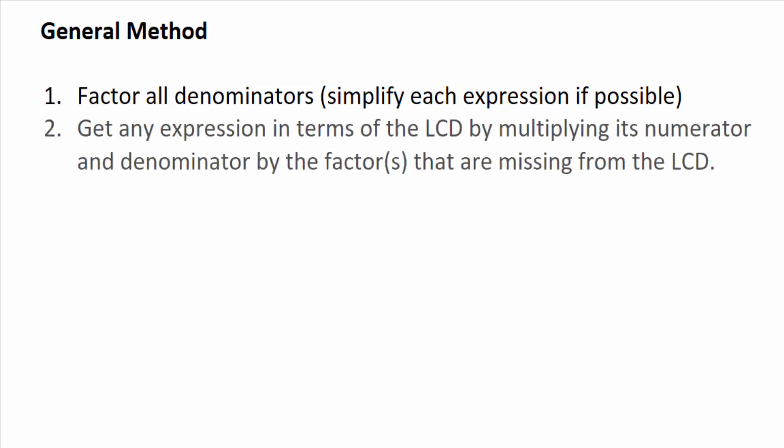The general method for adding rational expressions together: Number one, factor all denominators and simplify each expression if possible—if it's not in simplified form, do that; it'll make your life easier. Number two, get any expression in terms of the LCD by multiplying its numerator and denominator by the factor or factors that are missing from the LCD. And then you're going to add, and if necessary, simplify.